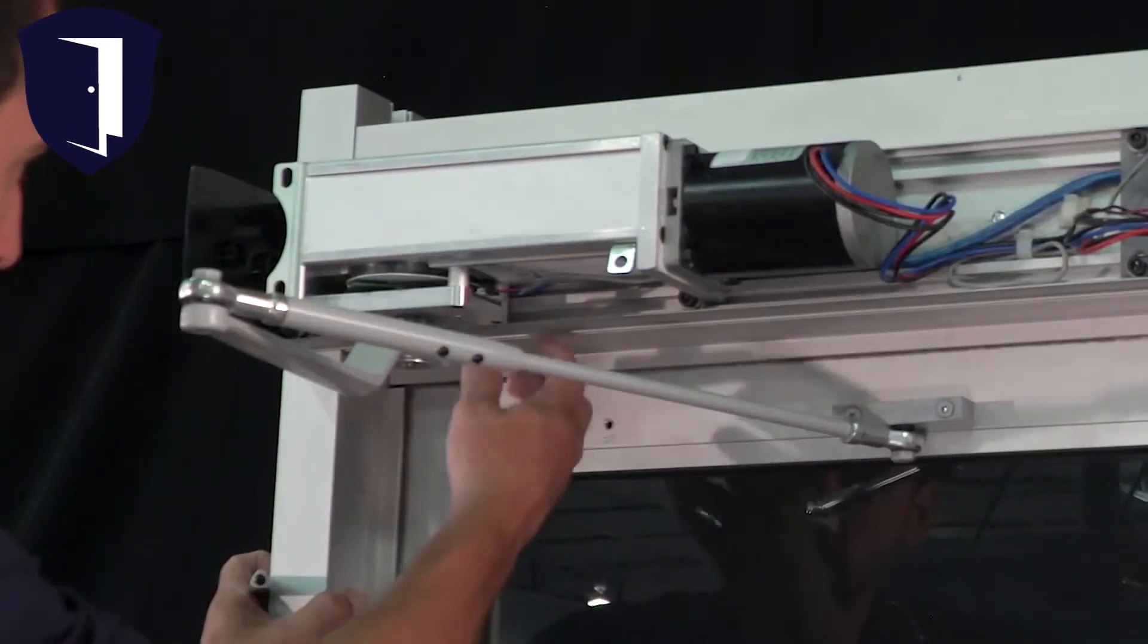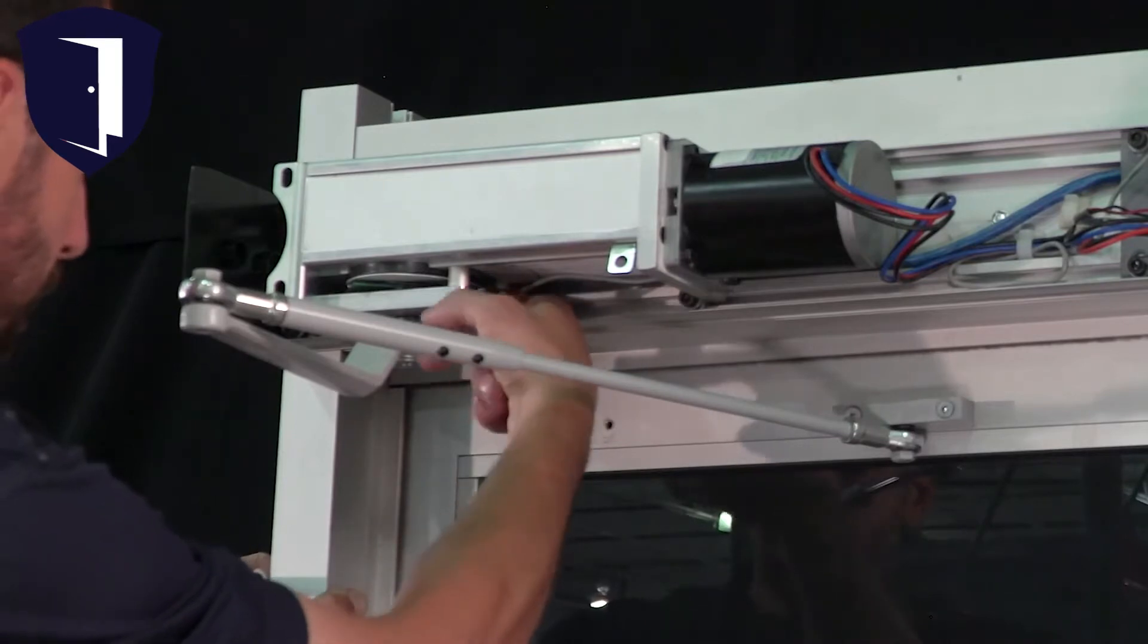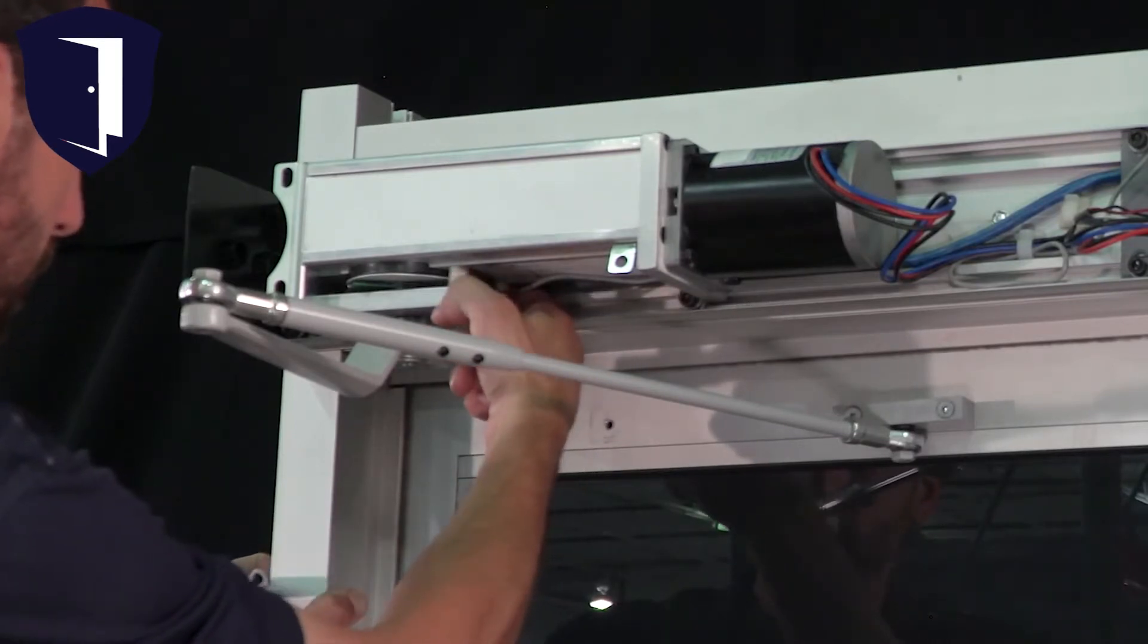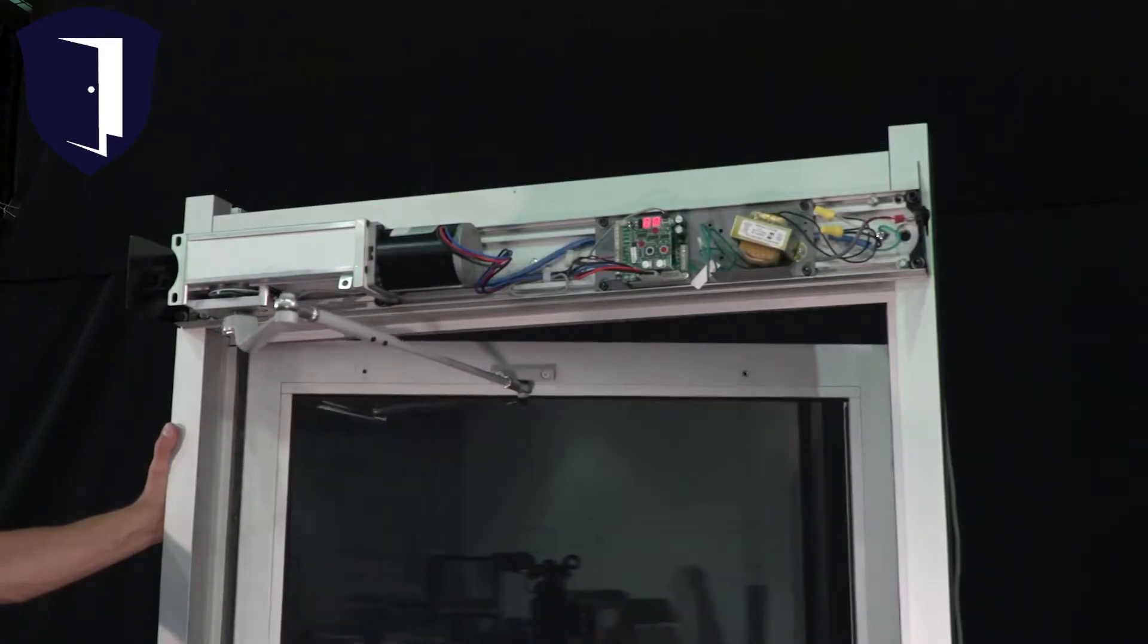The same idea applies to latch check function. This time adjust the lower magnet so that latch speed begins 10 degrees short of fully closed.